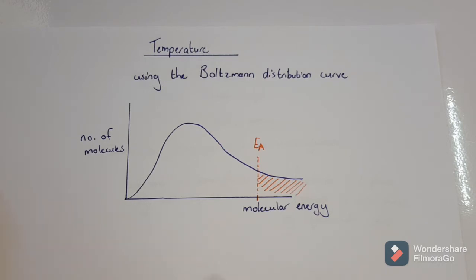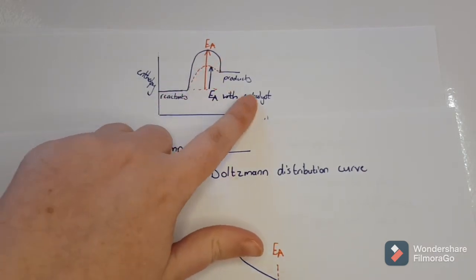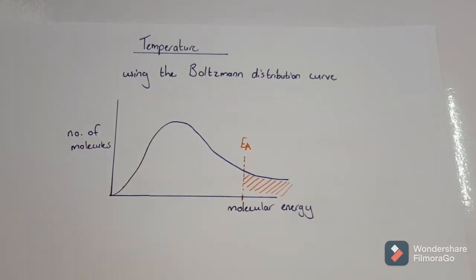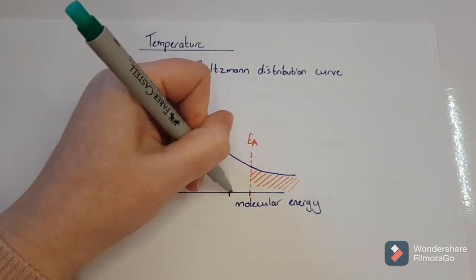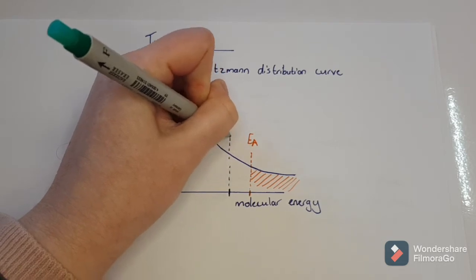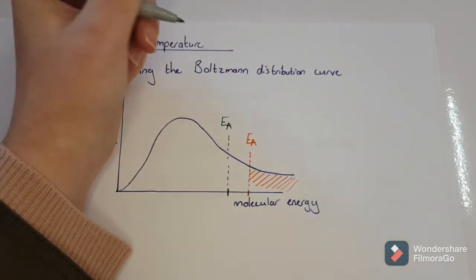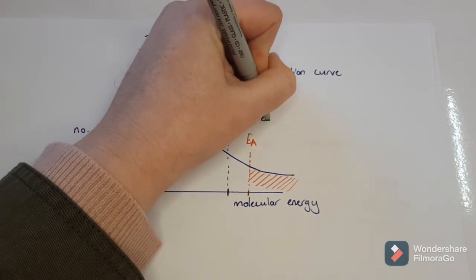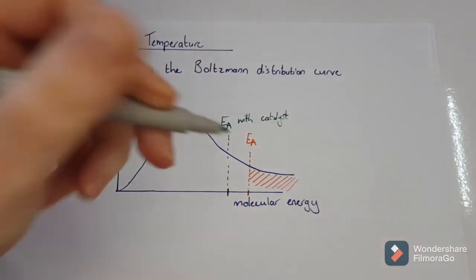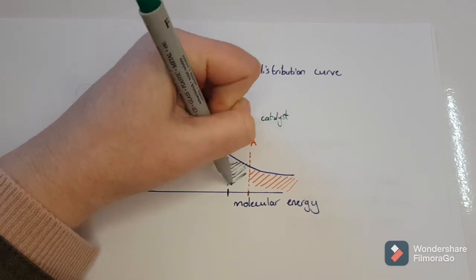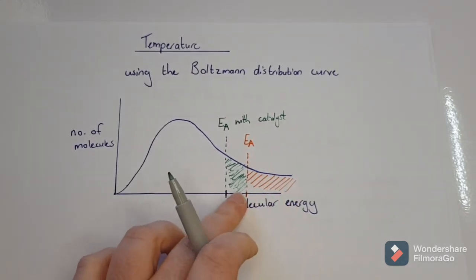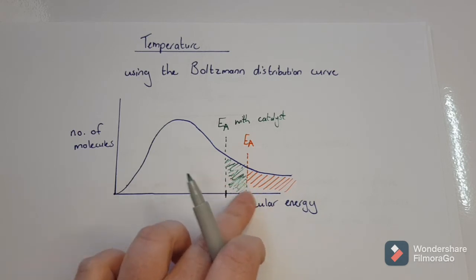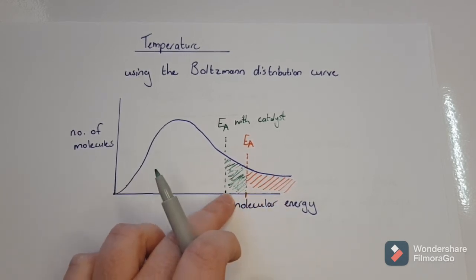With a catalyst, remember, the catalyst lowers the activation energy. That means with a catalyst I've moved the activation energy value lower — shifted it down. So I can draw the activation energy with a catalyst at a lower point, and now all of those additional molecules also have enough energy to react. That's why a catalyst shifts the activation energy and many more molecules can react, and that's why it speeds up the rate of reaction.